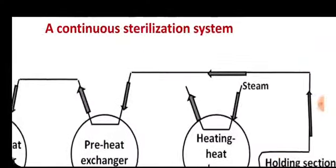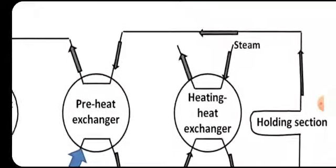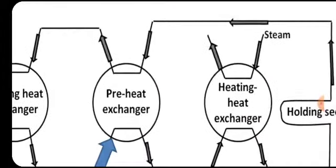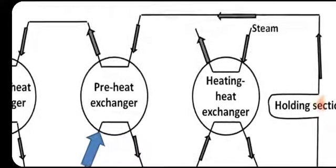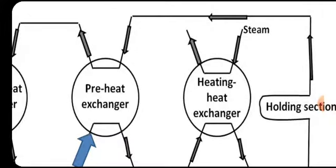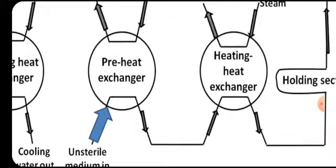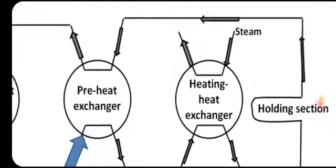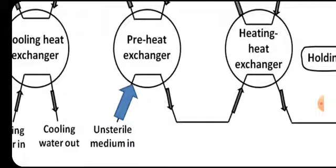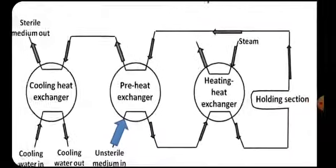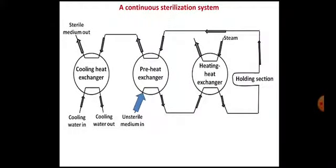The medium after leaving the holding section enters directly into the preheat exchanger while still hot. The unsterile medium entering from the bottom is cool, so there will be partial heating of unsterile medium and partial cooling of the sterile medium in this preheat exchanger — a partial heat exchange between the two streams.